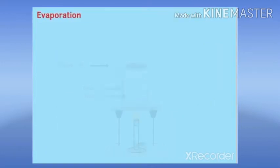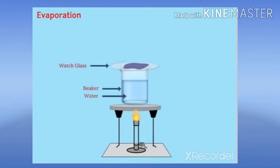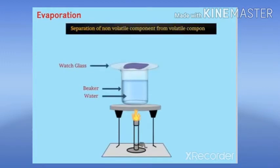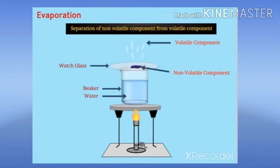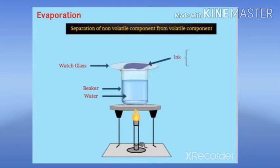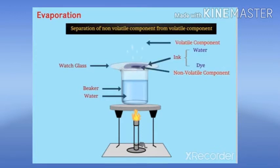Evaporation. This method is generally used to separate a non-volatile component from a volatile component, where the volatile component easily evaporates, leaving behind the non-volatile component in the mixture. For example, ink is made of dye and water. Dye, being non-volatile, gets separated from water during the process of evaporation.